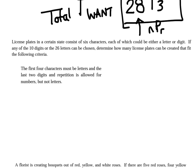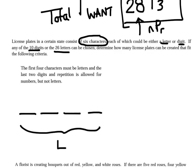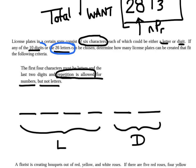Let's take a look at another example. License plates in a certain state consist of six characters, each of which could be a letter or a digit. If any of the 10 digits or 26 letters can be chosen, determine how many license plates can be created if the following criteria happens. The first four characters must be letters. So what I do is I draw out four lines, and then I'll just make a note to myself, these are letters. And the last two, because we had a total six, have to be digits. I'm going to put a D there for digits. Repetition is allowed for numbers, but not letters. So you can repeat the numbers, but not letters.